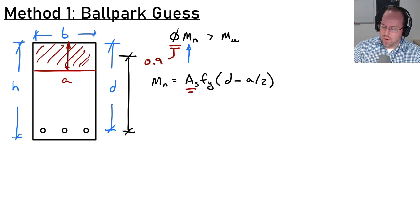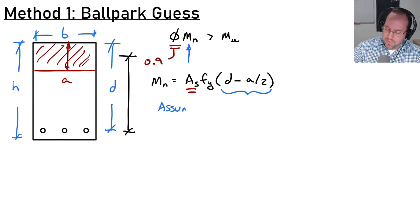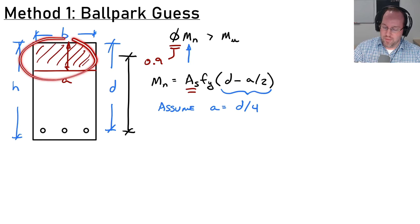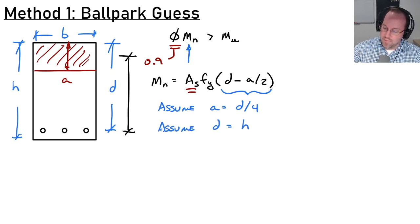For the ballpark method we need to make a few assumptions. The term d minus a over 2 — we don't actually know what that is, so we'll make assumptions. First, I'm going to assume that the depth of my compression block a equals d divided by 4, meaning roughly a quarter of my section is in compression. Furthermore, I need to assume some depth d — specifically, d equals the height h of my beam minus 2.5 inches.